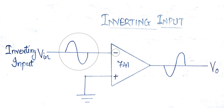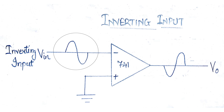Inverting input: In this configuration, the input voltage signal is applied directly through the inverting input terminal, which means the output gain of the amplifier becomes negative in value. A signal applied at the inverting input terminal is amplified; however, the output signal is out of phase with the input signal by 180 degrees.